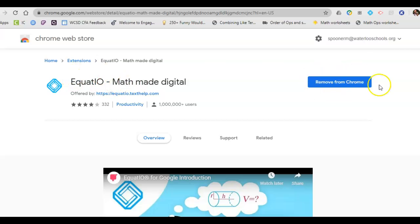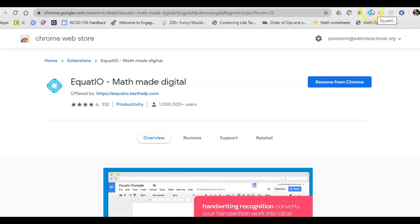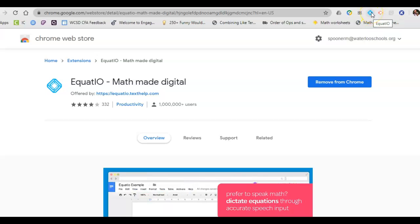So when you get here, yours is going to say instead of remove from Chrome, yours is going to say install and once you install it you should see a little blue diamond up here that looks like this and that's the key to let you know that you've got it installed on your Chrome browser.